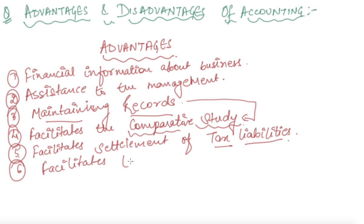The sixth advantage is that accounting facilitates loans. Preparation of accounts, or the position statement that is the balance sheet, helps the firm in ascertaining its credit worthiness, and thus financial institutions and banks help the firm by providing loans on the basis of their credit worthiness. So the firm is required to maintain accounts to go for loans.